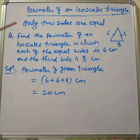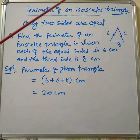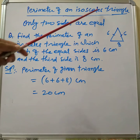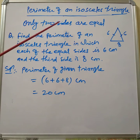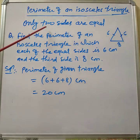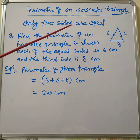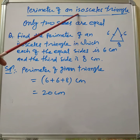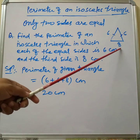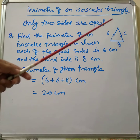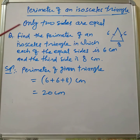Hello everyone, today we will learn to find the perimeter of an isosceles triangle. An isosceles triangle is one in which only two sides are equal. See here — this side is six centimeters, this side is six centimeters, and this side is eight centimeters, so this triangle is called an isosceles triangle.